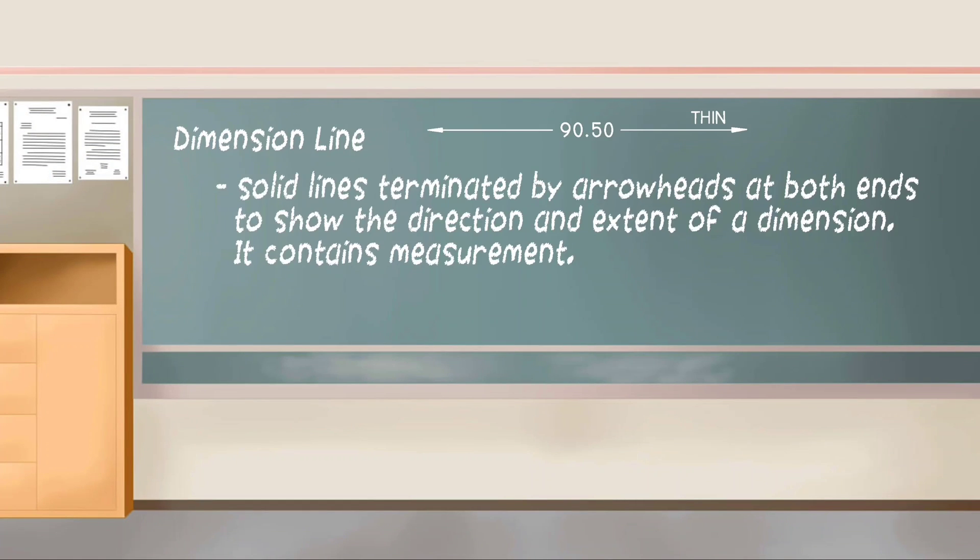Dimension line. It is a thin, solid line terminated by arrowheads at both ends to show the direction and extent of a dimension. It contains measurement.